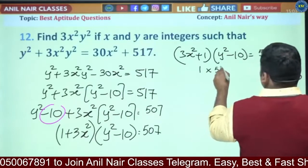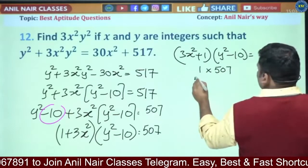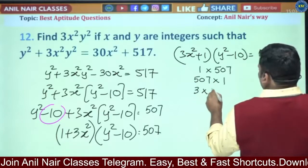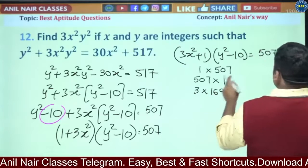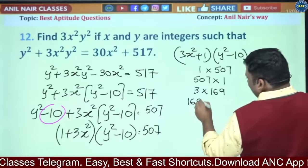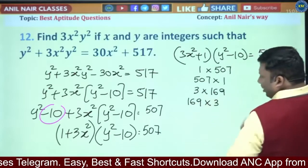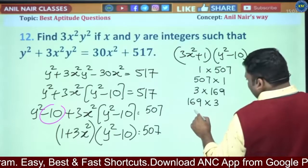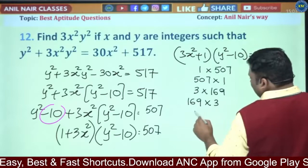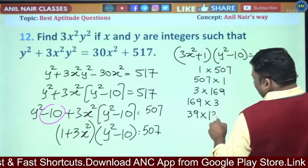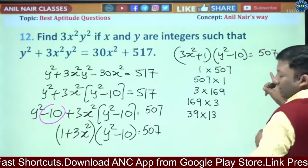It is 1 × 507, 507 × 1, 3 × 169. 3 × 16 = 48, 27. This is 169 × 3. This is 9 × 3 × 13². 13 means 13 × 9 into 13. Am I right?